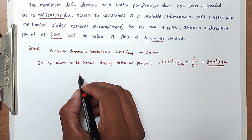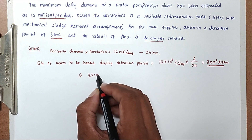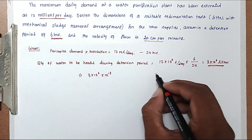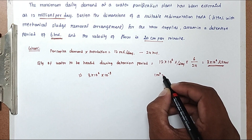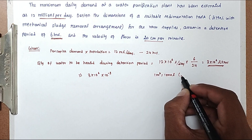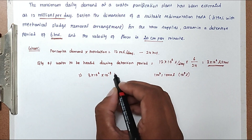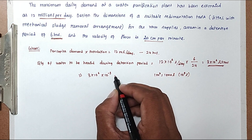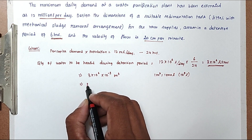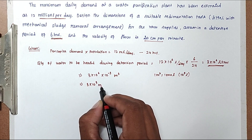We can convert into m³. So 3 × 10⁶ liters × 10⁻³, because 1 m³ equals 1000 liters. So now we get the value of 3 × 10³ m³.